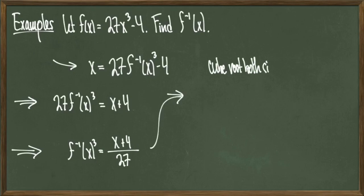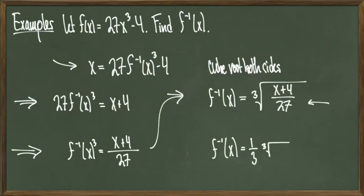So, what I need to do now is take the cube root of both sides. When I do that, I find that f inverse of x is equal to the cube root of x plus 4 over 27. And then after my final step of simplification, I get a final answer of f inverse of x equals 1 third times the cube root of x plus 4, and we're done.